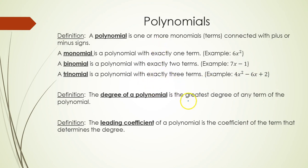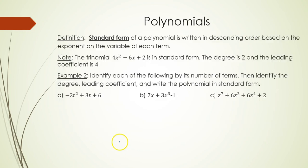The degree of a polynomial is the greatest degree of any term of the polynomial. The leading coefficient is the coefficient of the term that determines the degree — the term with the highest power. When we write a polynomial in standard form, it means writing it in descending order based on the power on each variable. For example, 4x squared minus 6x plus 2 is in standard form — degree two, leading coefficient four.